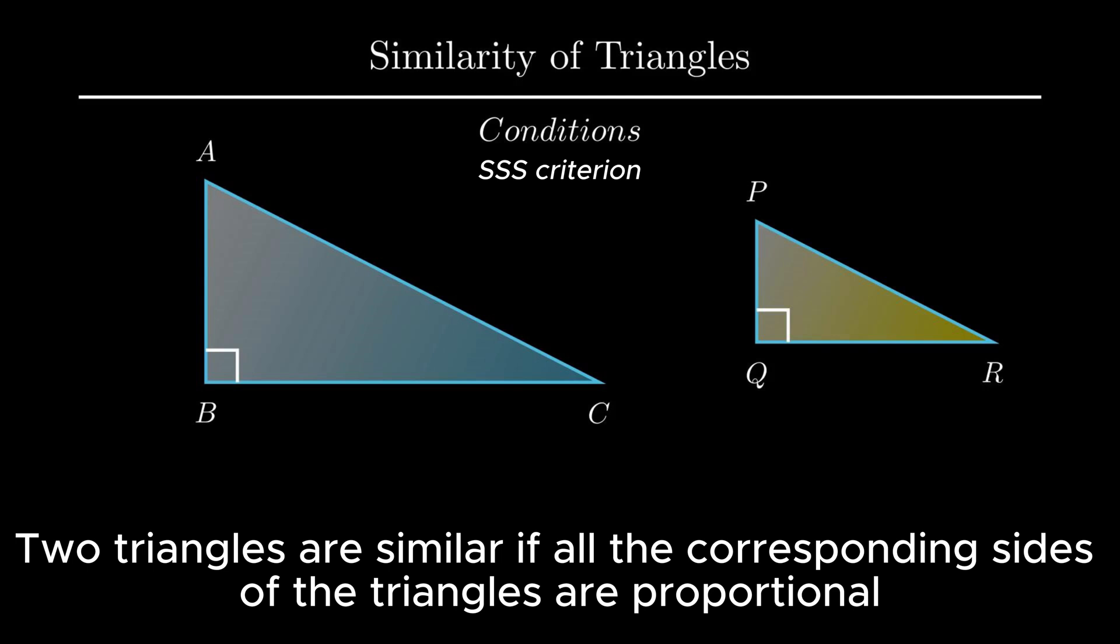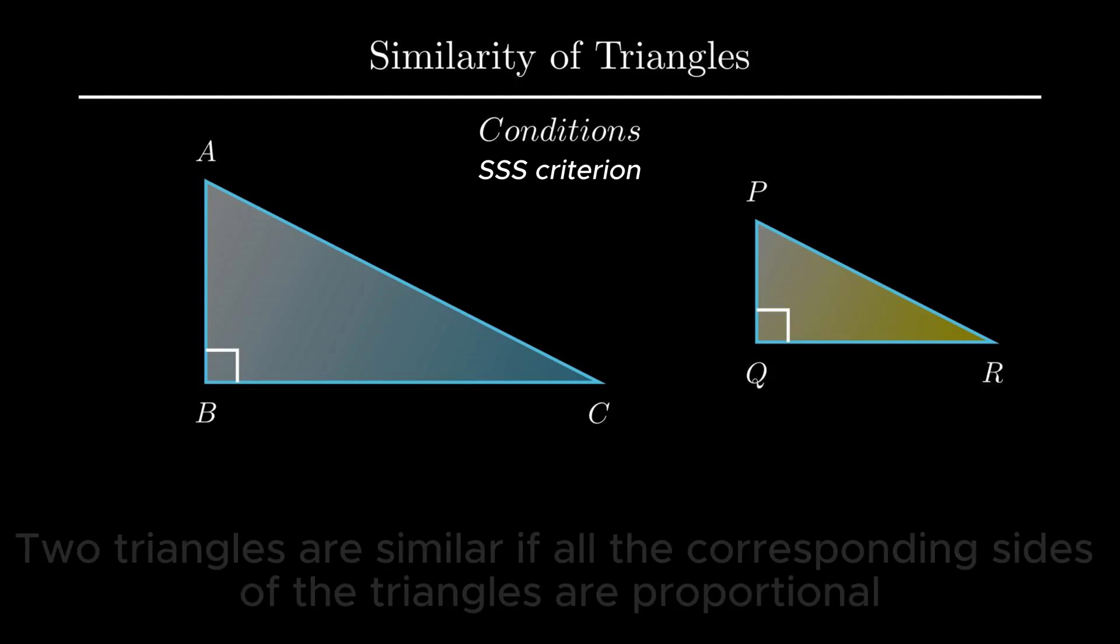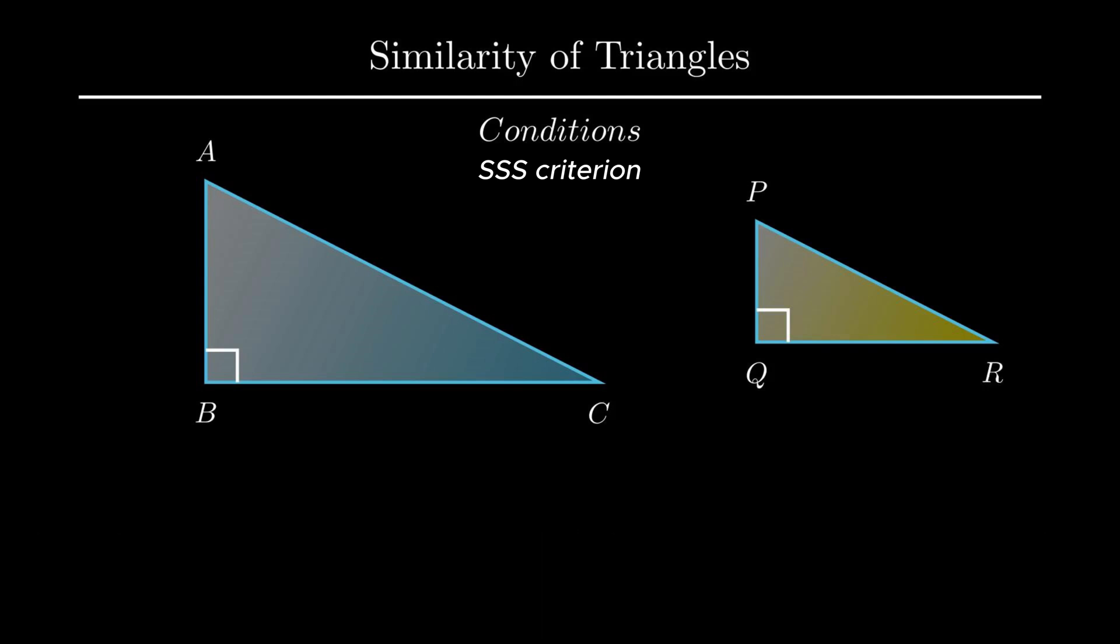Consider two right-angled triangles ABC and triangle PQR. If the ratio of the corresponding hypotenuse is equal to the base and height, i.e. ratio of side AC and PR equals ratio of side BC and QR equals ratio of side AB and PQ, then by SSS criteria, the given two triangles are similar.